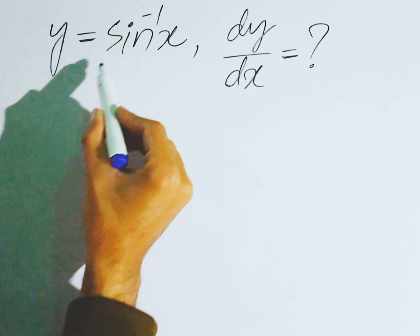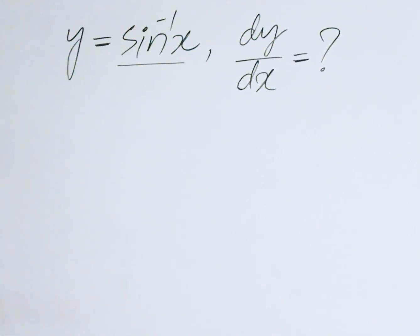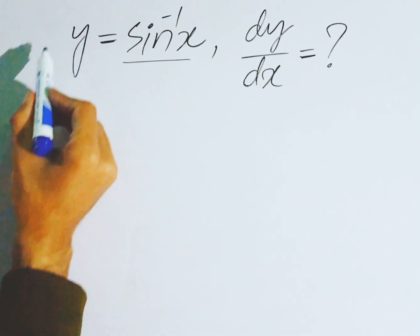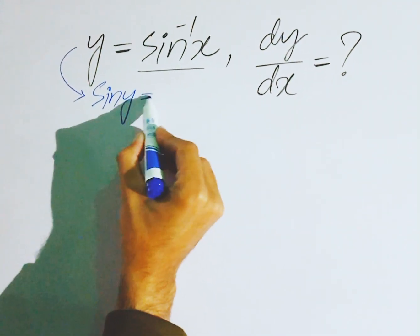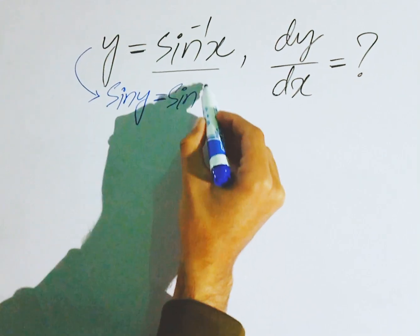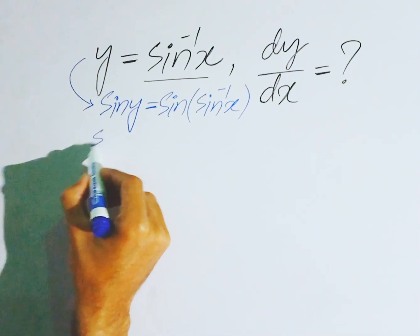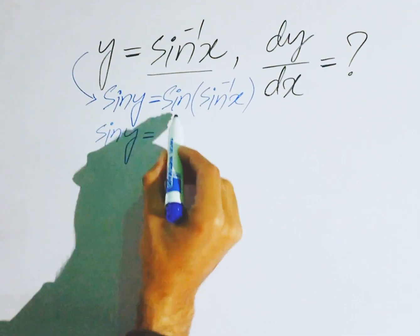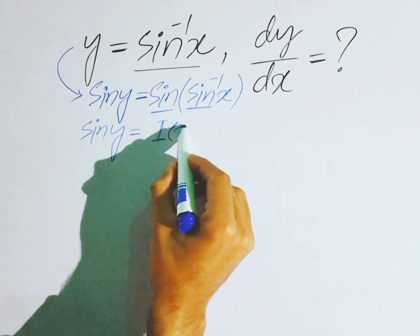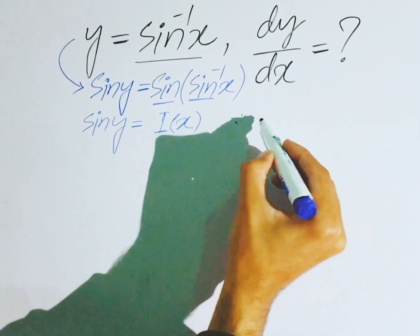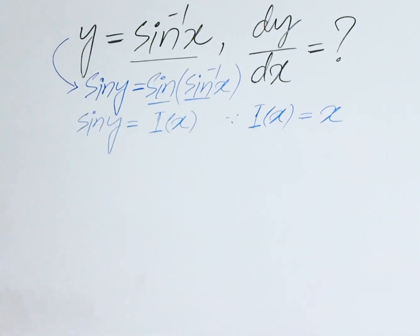y is equal to sine inverse of x and we are going to find the derivative of sine inverse of x. Apply sine to both sides, so this becomes sine y is equal to sine of sine inverse of x. Sine and sine inverse are inverses of each other, so this becomes the identity of x. The identity function means whatever you input, you get the same output.